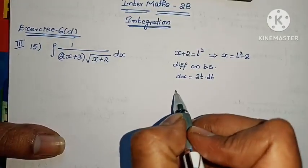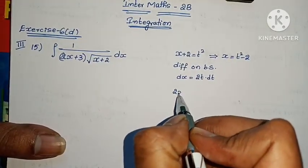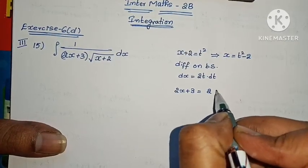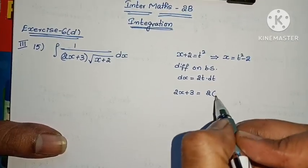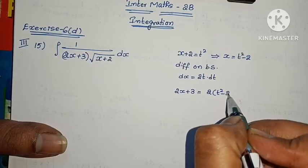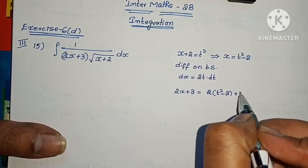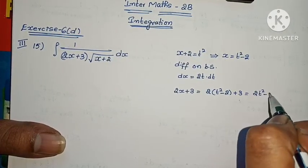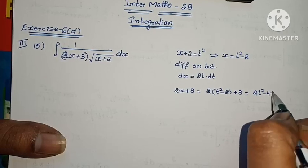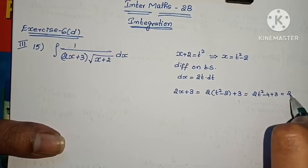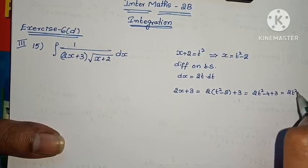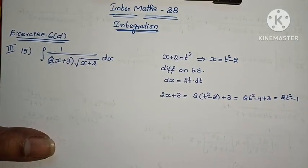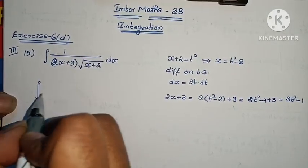Now, 2x plus 3 needs to be found. The value of 2x plus 3 equals 2 into (t squared minus 2) plus 3, which gives 2t squared minus 4 plus 3, that equals 2t squared minus 1.